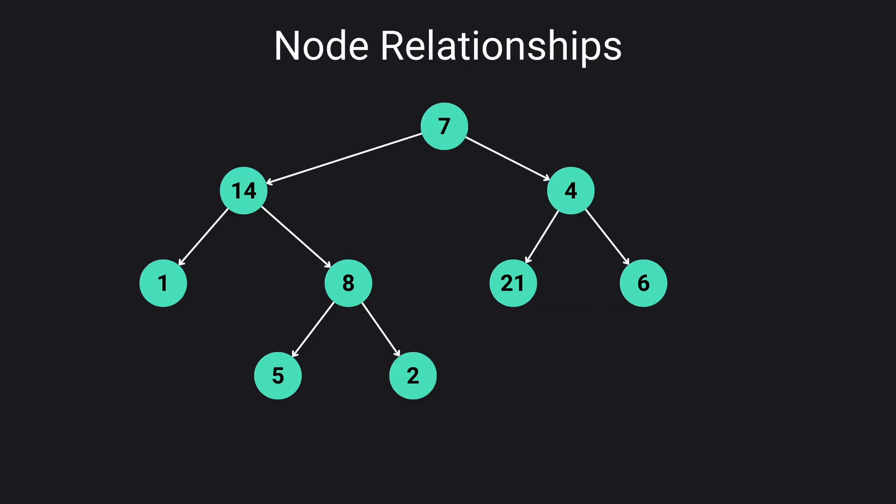The nodes that don't have any children like 1, 5, 2 and also 21 and 6 are called leaf nodes, and the top node which doesn't have any parent is called the root node which is 7 in this case.